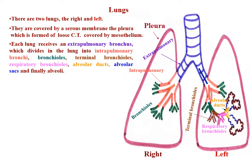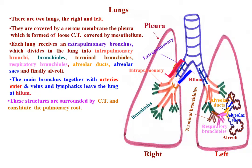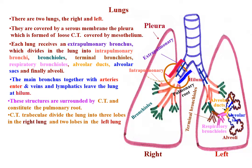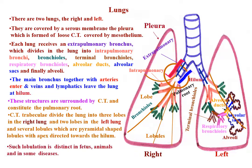The main bronchus, together with arteries, veins, and lymphatics, enters the lung at the hilum. These structures are surrounded by connective tissue constituting the pulmonary root. Connective tissue trabeculae divide the lung into three lobes in the right lung and two lobes in the left lung, and several lobules, which are pyramidal-shaped with apex directed towards the hilum. Such lobulation is distinct in the fetus, in animals, and in some diseases.